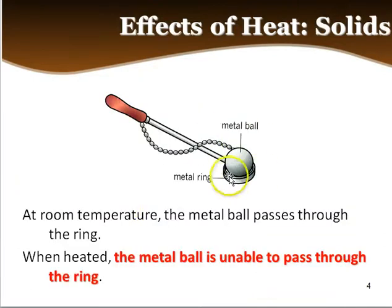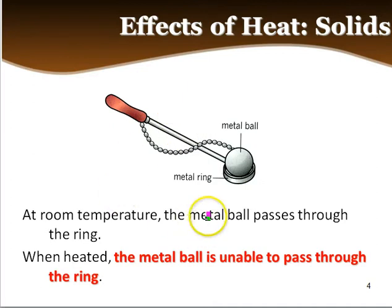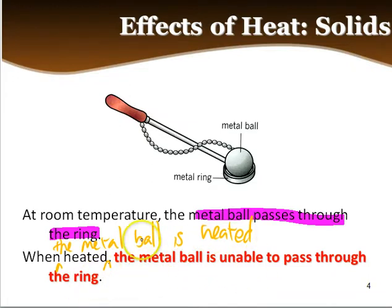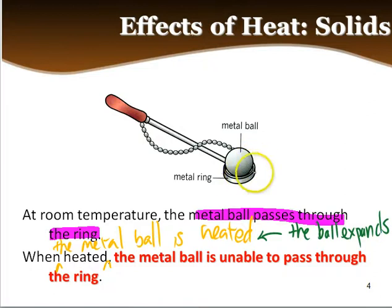As an example of the effects of heating on solids: at room temperature, this metal ball is able to pass through the ring. However, when the metal ball is heated, it is unable to pass through the ring — because when heated, the ball increases in size, the ball expands. When the ball expands, it's unable to pass through the metal ring anymore.